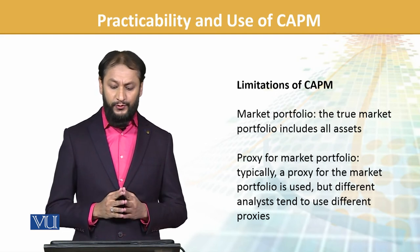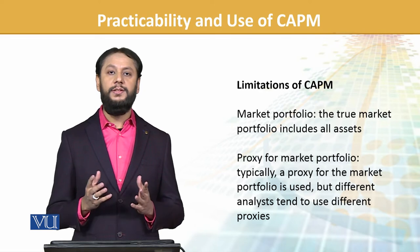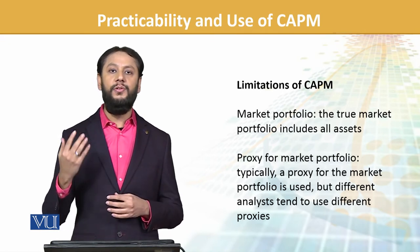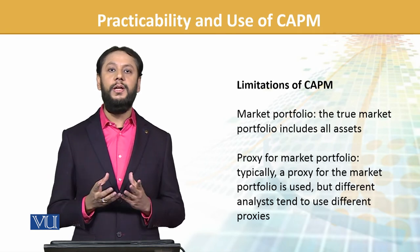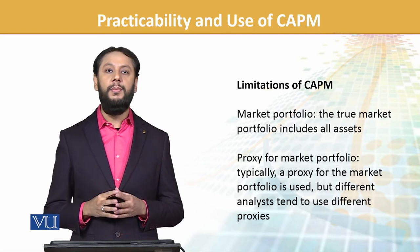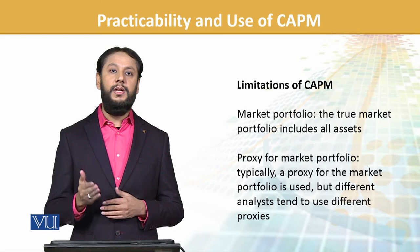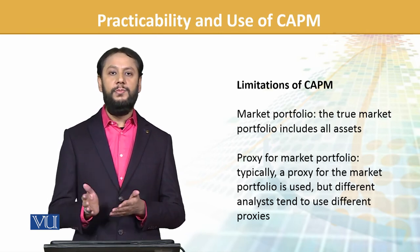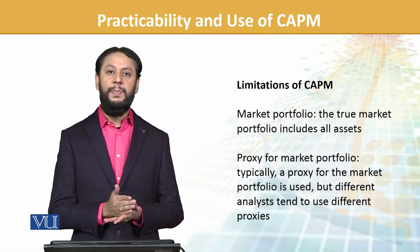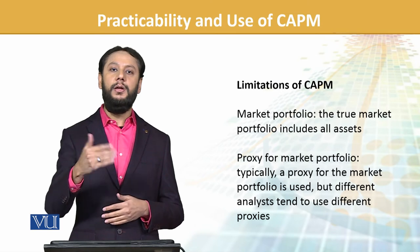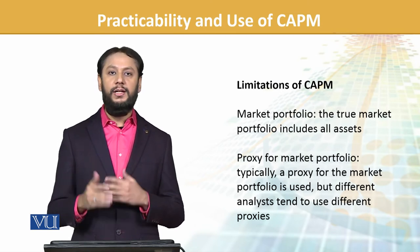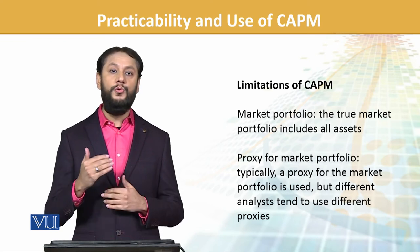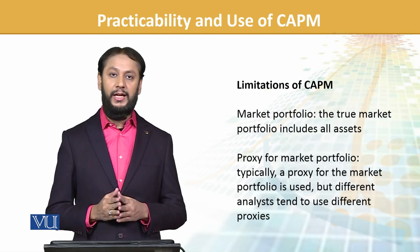Regarding limitations of CAPM: a true market portfolio includes all assets, but practically including all assets is easy to say but not easy to do. In the US market there are thousands of assets — combining all of them is not possible. Even within the stock market, there are hundreds of shares in an index. In Pakistan, for example, we have six to seven hundred shares, but we use KSE 100 as a proxy for the market. If one analyst uses KSE 100 and another uses KMI 30, their proxies are different and that can lead to different conclusions. Different analysts tend to use different proxies, so their estimations differ — this is a limitation of CAPM.